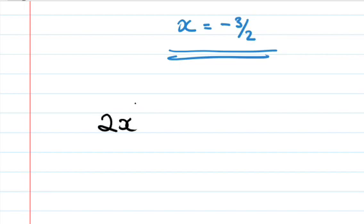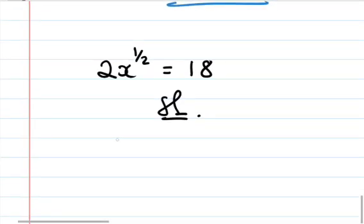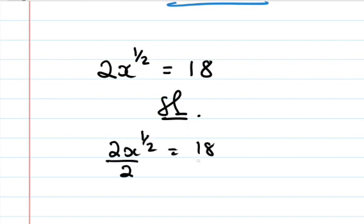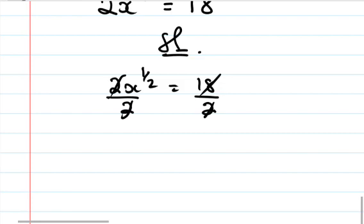Question number 4: 2x to the power half is equal to 18. First, remove the coefficient of x — divide both sides by 2. That gives x to the power half is equal to 9.